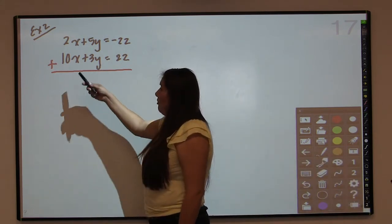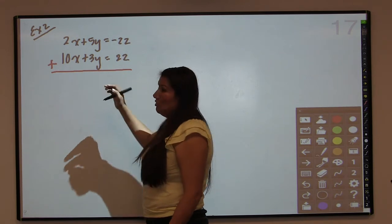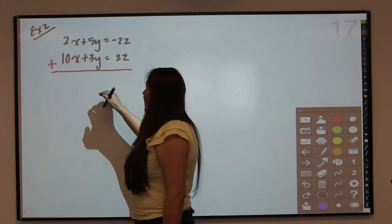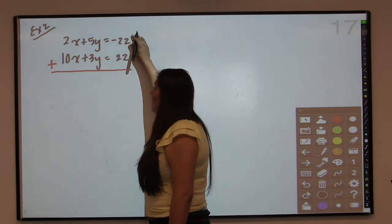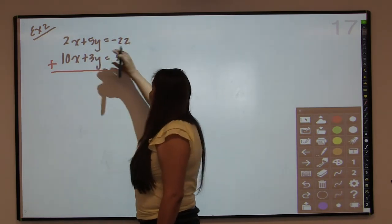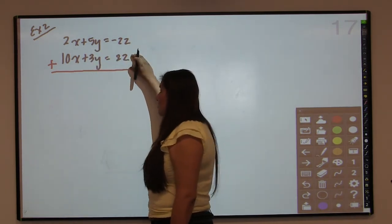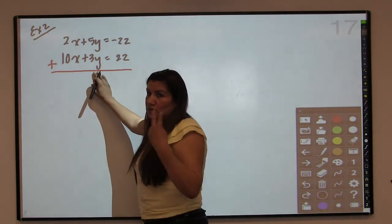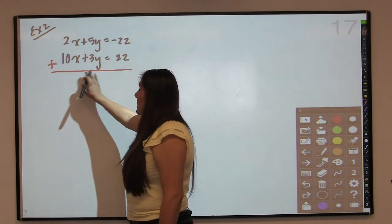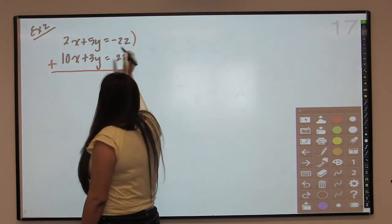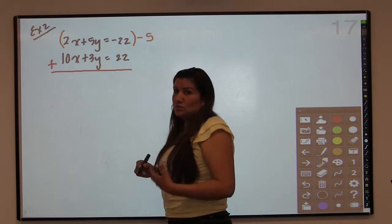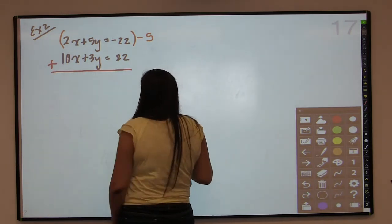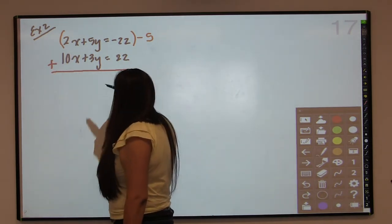It doesn't matter which variable you choose to eliminate first, but there's always an easier way. For example, if I multiply the top equation by 3, then this will be 15y. If I multiply the bottom equation by negative 5, it will be negative 15y. That requires two steps. But if I choose the x variable instead, I can multiply the top equation by negative 5, and that only requires one step because that will give me a negative 10x. So I'm going to do that now.